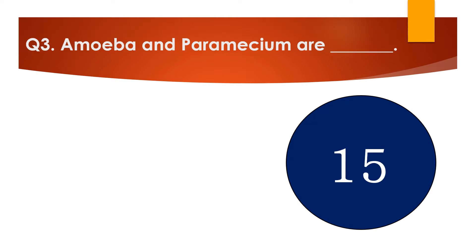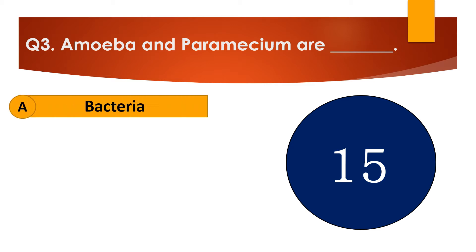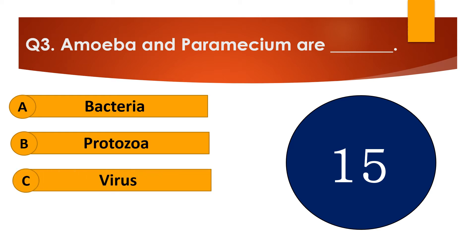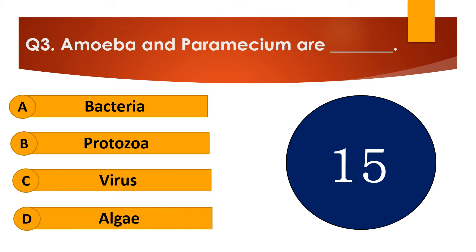Question number 3. Amoeba and Paramecium are dash. The options are: A. Bacteria, B. Protozoa, C. Virus, or D. Algae.